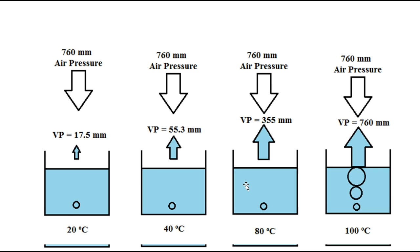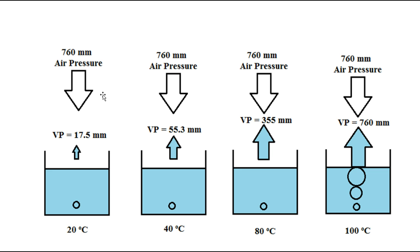Now, boiling. Water at 20 degrees has a vapor pressure of 17.5 millimeters of mercury. Here it is at 40, 80, and 100 degrees. Average air pressure is 760, and it's pushing down on this cup of water. At different temperatures, as the water is evaporating it's trying to form a bubble, but we have a problem: inside the bubble the pressure equals 17.5, while the outside air pressure pushing down on it is 760. That 760 destroys the bubble.